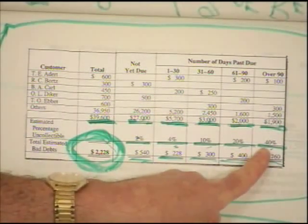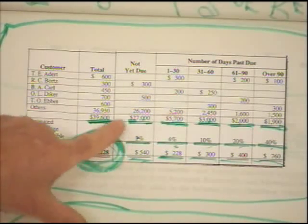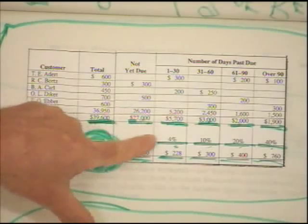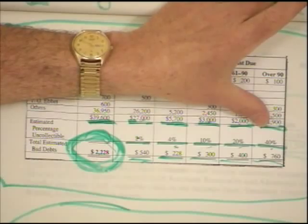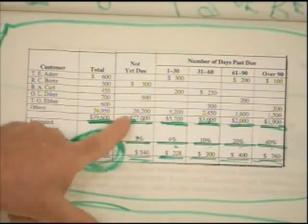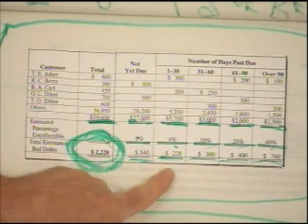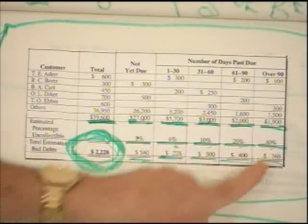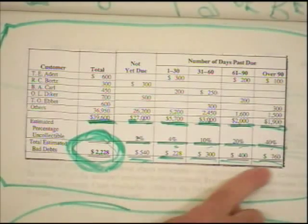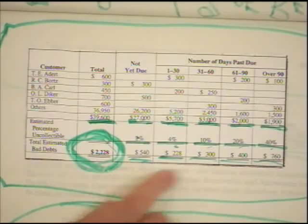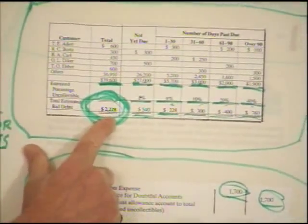What we do is take each dollar amount in each aging bracket and multiply it by the assigned percentage. For example, 2% of $27,000, 4% of $5,700, and so on, extending these out across each category. When we total up all these estimated uncollectible amounts across each bracket, it comes out to $2,228. That is our estimate of what we're not going to collect out of the $39,600.